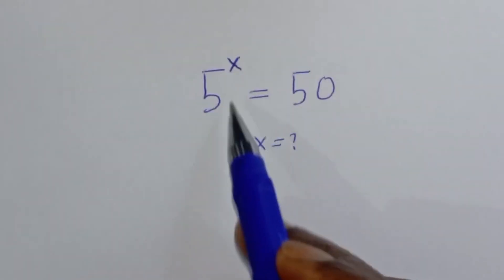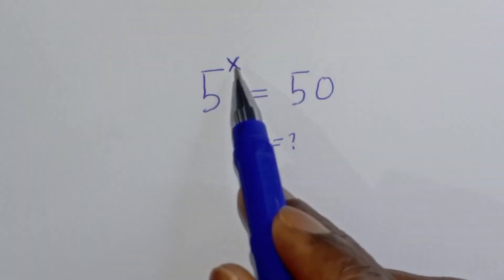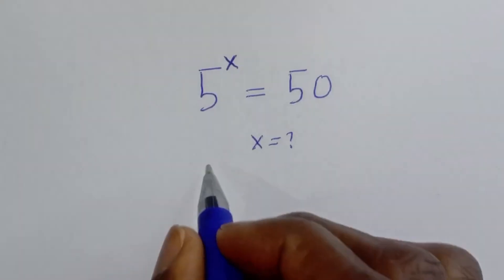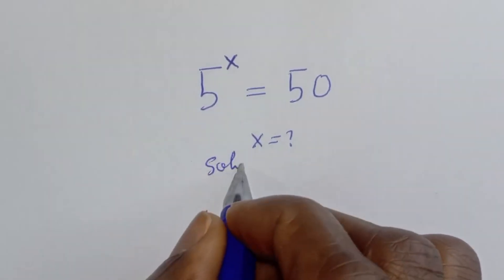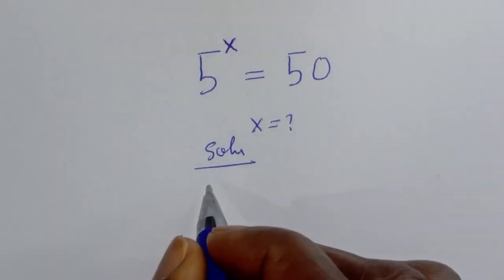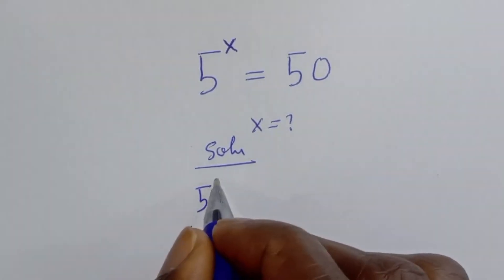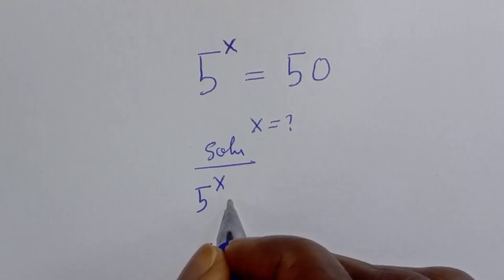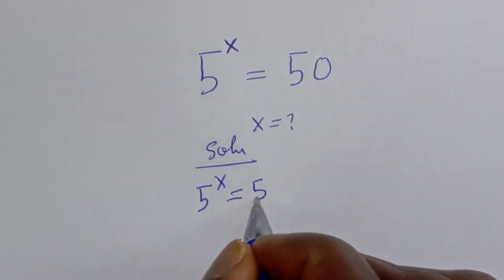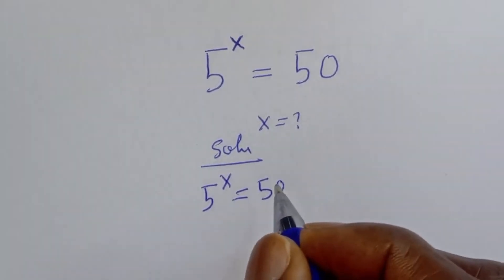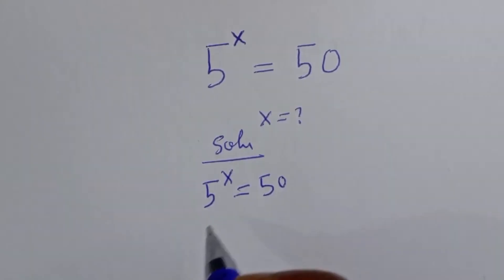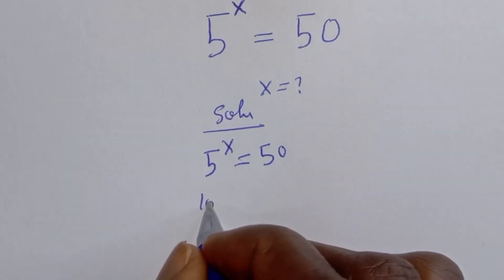How to solve for s from this given math problem: 5 raised to power s is equal to 50. Solution: let's take the log of both sides. We have log 5 raised to power s is equal to log 50.